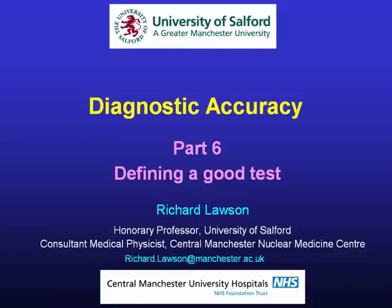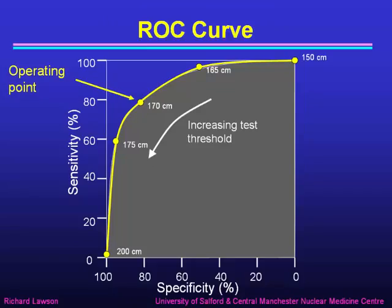This is part six of my lecture on diagnostic accuracy, where I'm going to talk about how we define a good test. We've already seen in the previous part how we can define an ROC curve, a receiver operating characteristic curve, where we plot sensitivity against specificity and show how they change as we change the test threshold to give us a curve — the ROC curve — and we choose a point on that curve, which is our operating point.